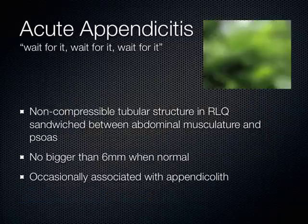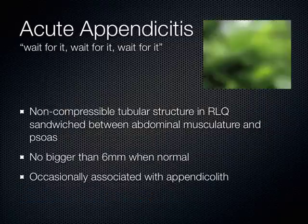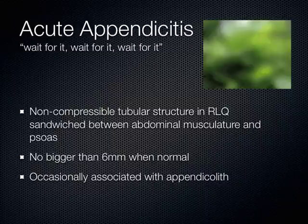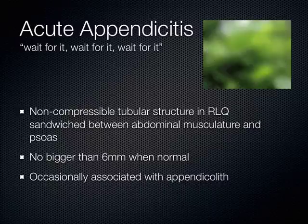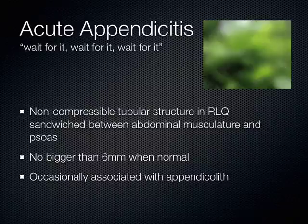When you look for the appendix, you're searching for that non-compressible tubular structure in the right lower quadrant that gets sandwiched between the abdominal musculature and the psoas muscle. All of a sudden you get lucky and it pops its head out at you — then as fast as it does that, it's gone again. You end up going: did I just see it? Hit freeze, scroll back and see it again. There's a lot of art here — it's very operator-dependent, but over time you do get better with this. There's also something called an appendicolith, which literally means a poopstone.